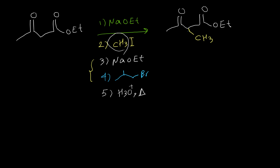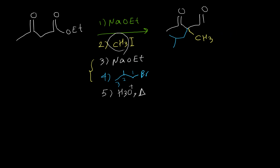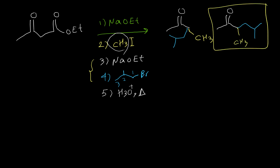So I take the isobutyl group and attach it to the alpha carbon, giving us one, two, three carbons on that branch. The last step is hydrolysis. When we perform hydrolysis, the whole ester group leaves the structure — it converts to carboxylic acid, then carbon dioxide. So I erase this part and rewrite the structure. We have this acetone, and on the alpha carbon of acetone we have the isobutyl group and we also have the methyl group. This is our answer.